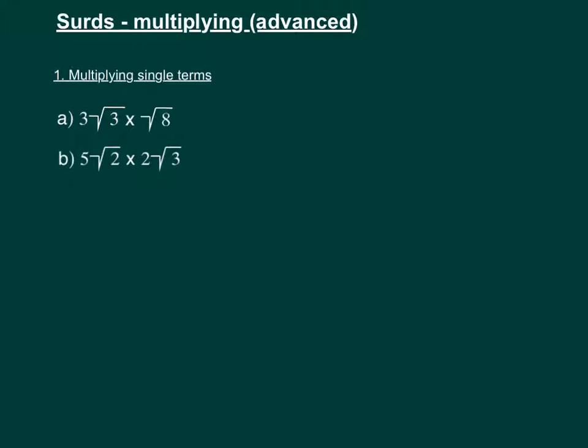So looking at these single terms, we've got 3 root 3 times root 8. When we're multiplying surds like this, you multiply the whole numbers together. There isn't a whole number here, but we can imagine it's a 1. And we multiply the roots or the surds together as well.